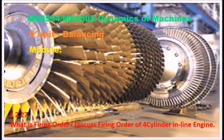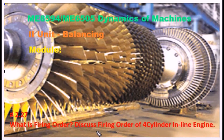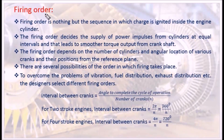Today's topic is MA8594 / MA6505 Dynamics of Machines, Second Unit Balancing, Module 2.27: What is firing order? Discuss the firing order of a four-cylinder inline engine. Firing order — what is it and from where do we derive it?